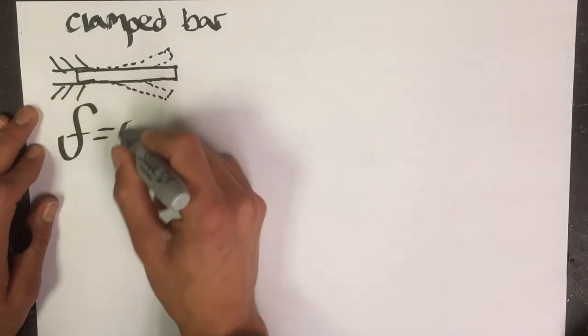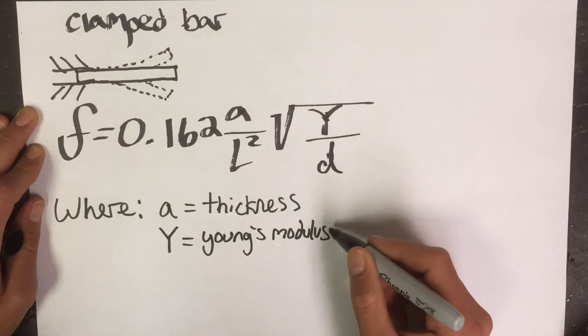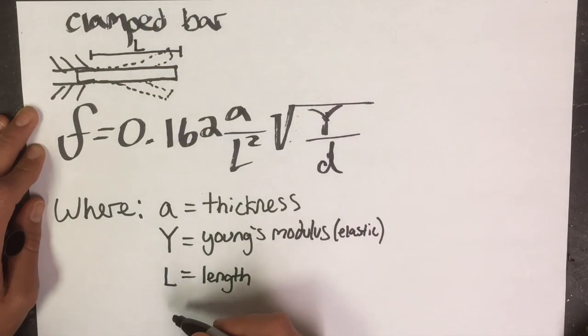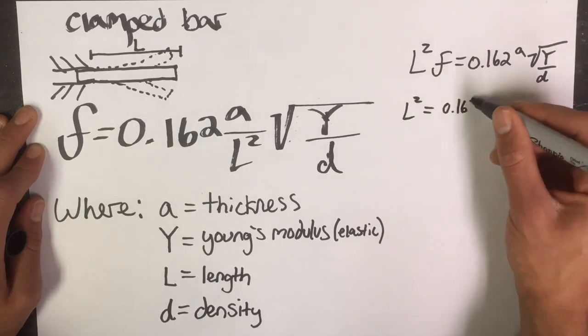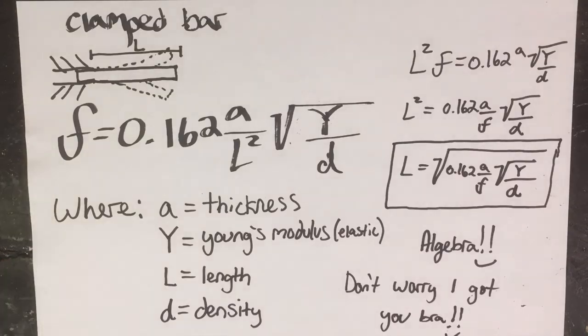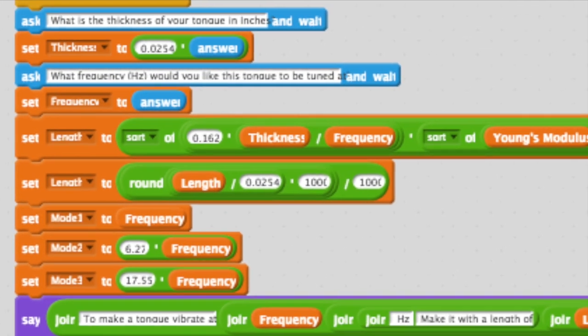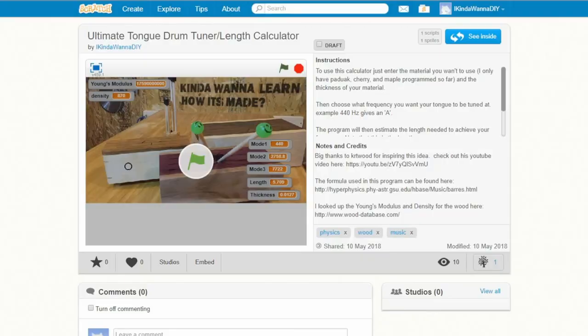To calculate the length of each tongue, I used the formula for the frequency of a fixed bar at one end, as this is essentially what each tongue is. I rearranged the formula to solve for length. That way I can choose the frequency I want and calculate the length based on my material's thickness, density, and elastic modulus. Don't worry, I did the math for you. Check out the video description for a link to the length calculator.